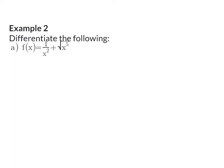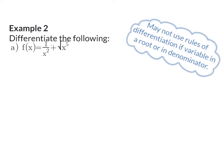Example 2, part a: Differentiate the following. We are given a function that consists of two terms. You are not allowed to use your rules of differentiation if you have variables inside roots or in the denominator, so we will have to rewrite this function first. When rewriting f(x), I want to get x squared out from under the denominator, and that means it will become x to the power of minus 2. In my second term, I want to rewrite without the square root, so it is going to become x to the power of 5 over 2. Now I can calculate the derivative using my rules of differentiation.